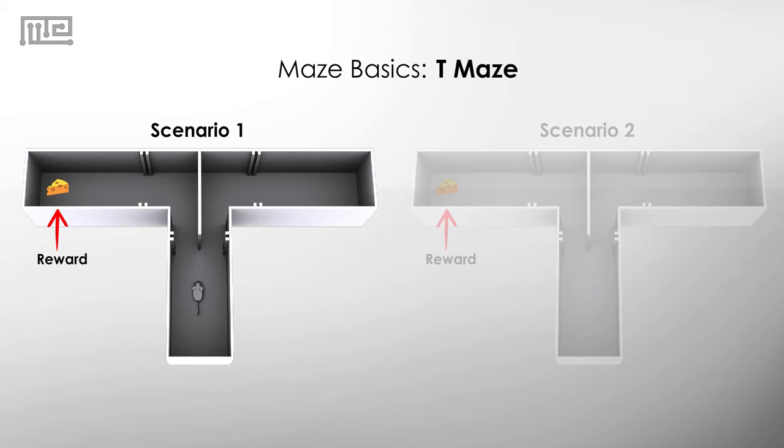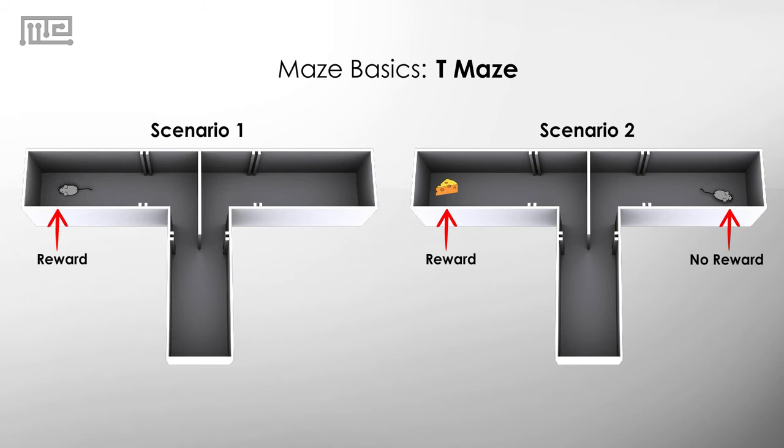The mouse can now choose which arm to explore. If it chooses correctly, it consumes the other reward. If it chooses incorrectly, it will see that the food well is empty.